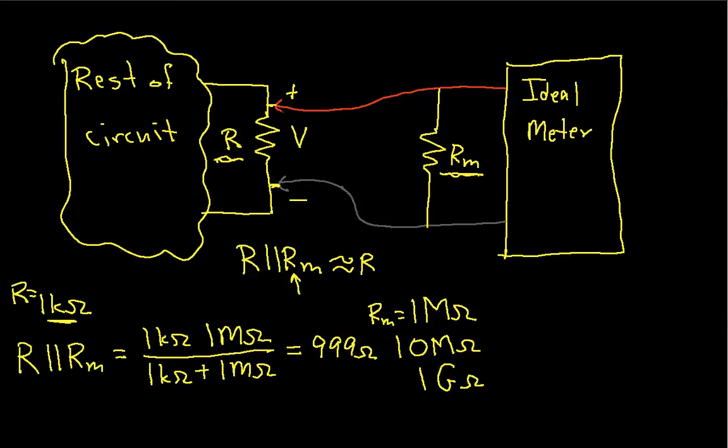And let's suppose that RM is also 1 megohm, then the parallel combination of these two will be 0.5 megohms.